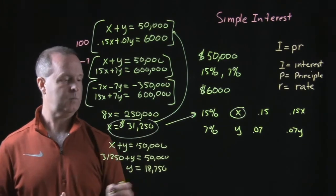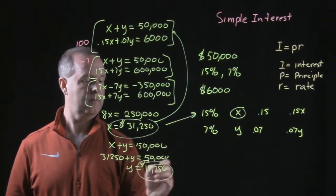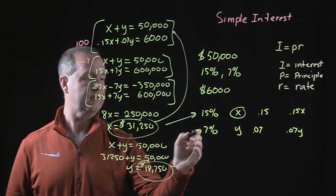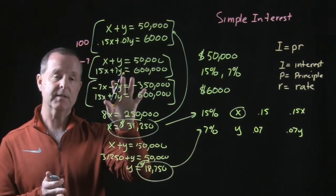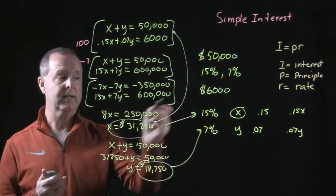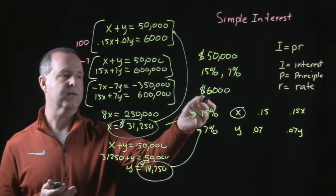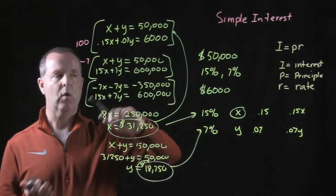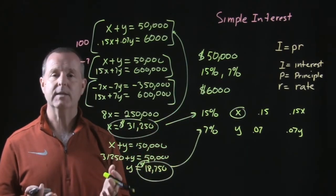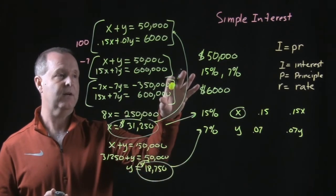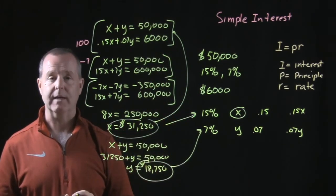That amount — $18,750 — is the amount at the 7% account. So those are the two amounts in this scenario that will yield exactly $6,000. If we wanted to change the yield to $7,000 or use a different initial principal, we could do that as well. But for this particular starting point, this provides the two amounts we're looking for.